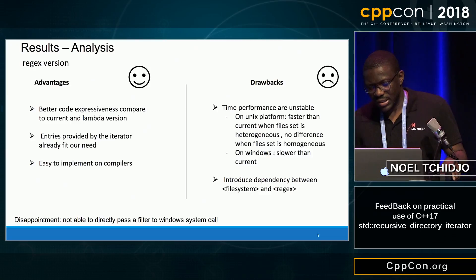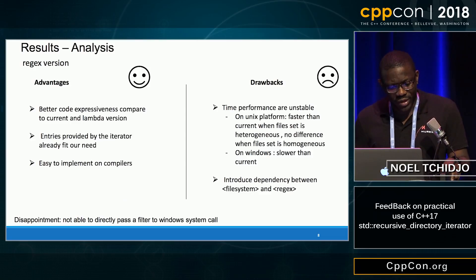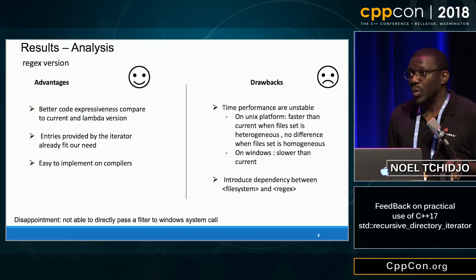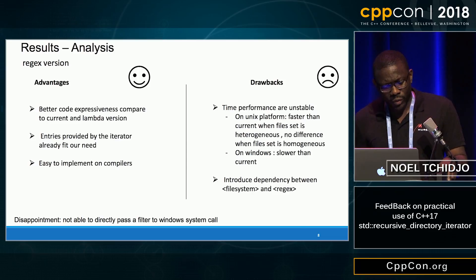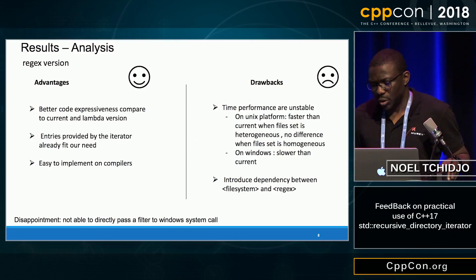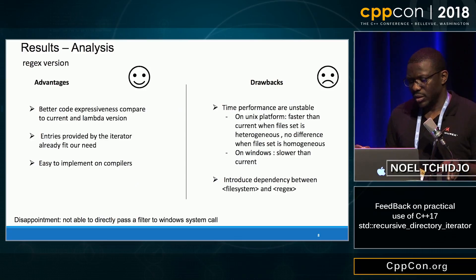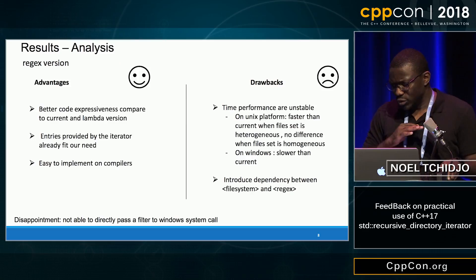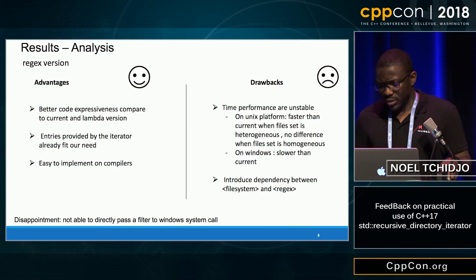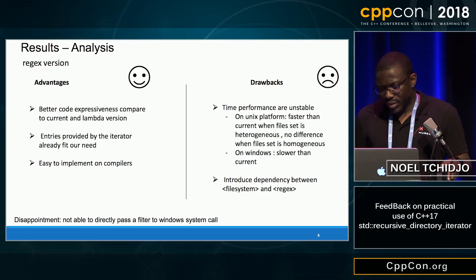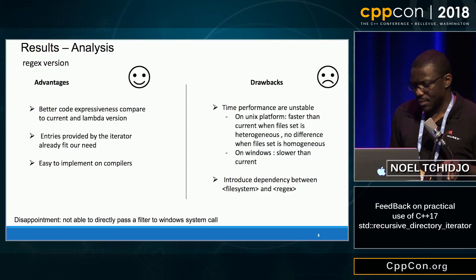So what about advantages and drawbacks for the regex version? For advantages, we have better code expressiveness compared to the current version and compared to the lambda version. The entry provided by the iterator already fits our need, and it is also easy to implement in a compiler. For drawbacks, the time performance was stubborn. On Unix, it was faster than the current version when types of files were heterogeneous, and there was no difference when file sets were homogeneous. On Windows, the regex version was slower than the current version. Also, the regex version introduced a dependency between the file system and regex.